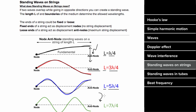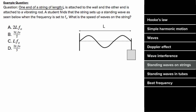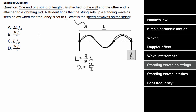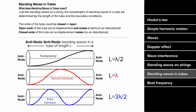What does an example problem involving standing waves on strings look like? One end of a string of length L is attached to the wall and the other to a vibrating rod. A student finds the string sets up a standing wave at frequency F-naught. The string length L equals three-halves of a wavelength, so the wavelength is 2L/3. Since the speed of the wave always equals wavelength times frequency, the speed here is (2L/3) times F-naught. The best answer is D.